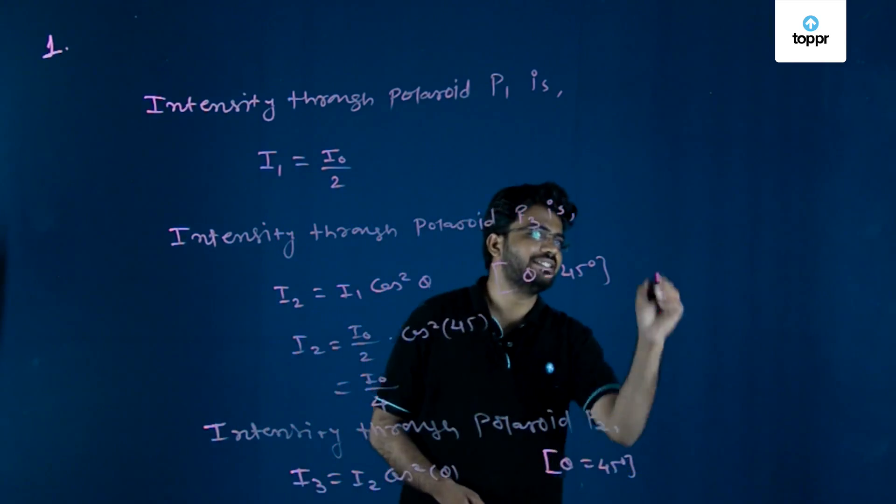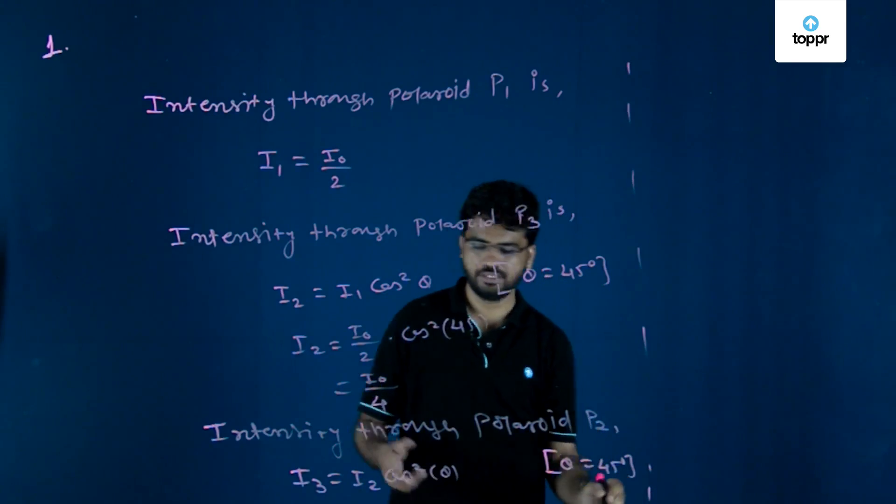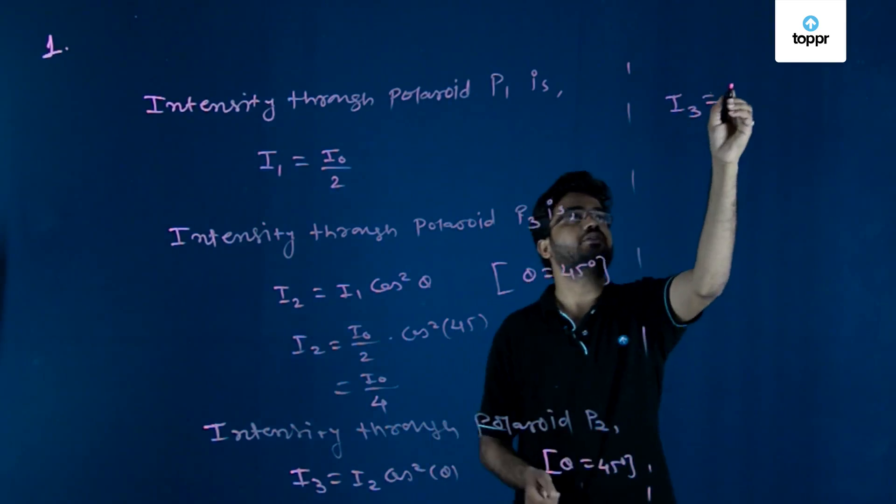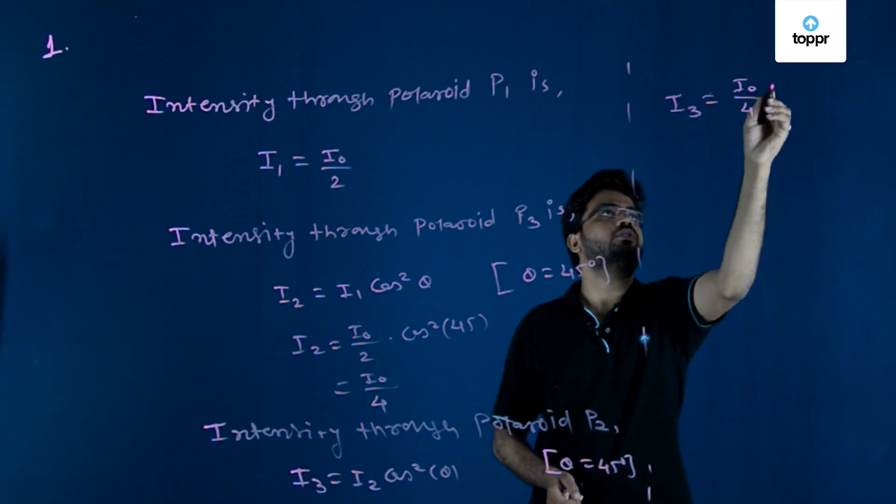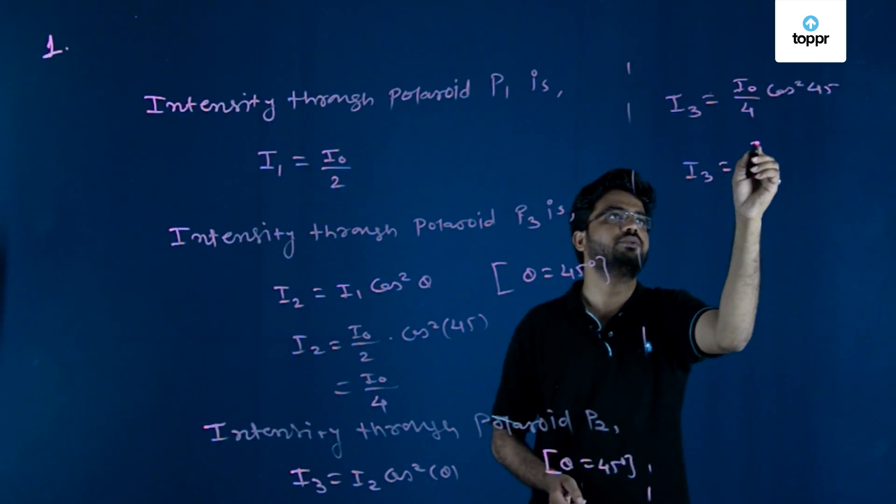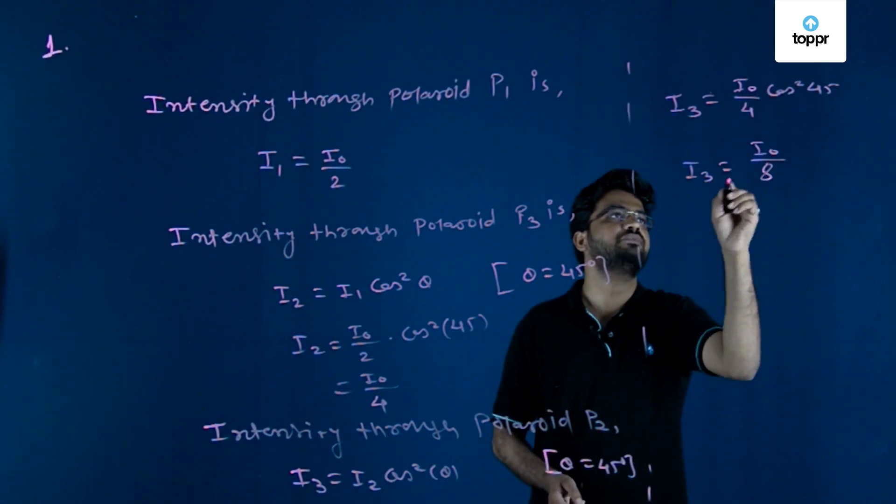So you will easily see here I₃ equals I₀ by 4 times cos²45. So I₃ equals I₀ by 8.